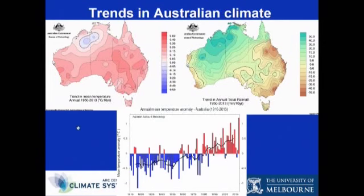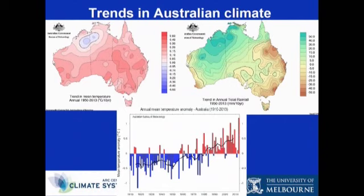Looking at temperatures in Australia, this panel shows data from the Bureau of Meteorology for temperature variations over the last 100 years from 1910 to the present. We see lots of year-to-year variability, and then from about 1950, a pronounced warming over the last 50 years of about nine-tenths to one degree in average temperature across the whole of Australia. In fact, 2013 was the hottest year averaged across Australia in all of the last 100 years. But that pattern of temperature variation is not uniform across the whole continent.